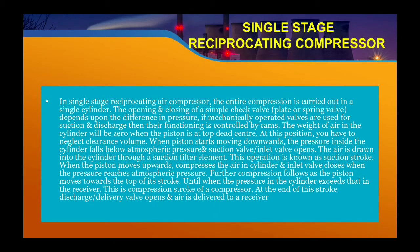When the piston starts moving downwards, the pressure inside the cylinder falls below atmospheric pressure and the suction valve or inlet valve opens. So when the piston starts moving downwards, the pressure inside the cylinder falls, and the atmospheric air comes through the suction valve or inlet valve. The air is drawn into the cylinder through a suction filter element to reduce the moisture in the air.